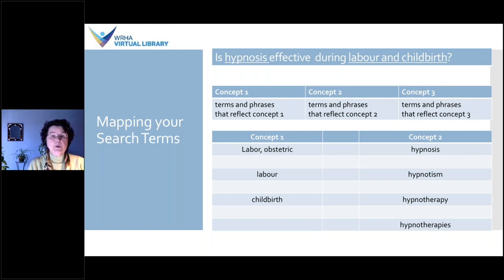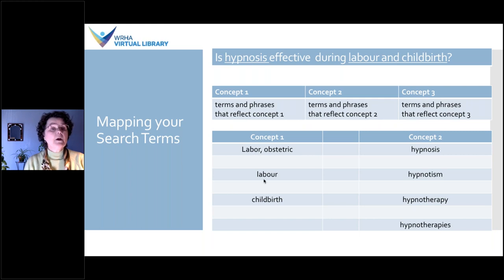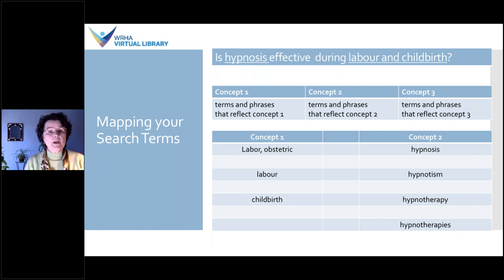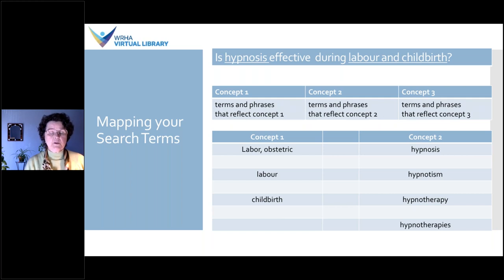For each concept, you determine what the phrases, synonyms, and variant spellings are and put them in one row. For example, in the first column for labour I have: labour obstetric, childbirth, and the alternate spelling of labour. In the second column for hypnosis I have: hypnosis, hypnotism, hypnotherapy, hypnotherapies. This is very much an iterative process — as you're searching you might find more terms that you want to come back and consider using, making sure you use the most relevant ones for your topic.